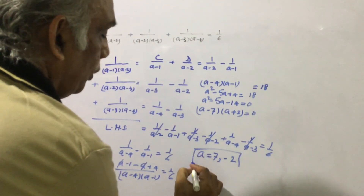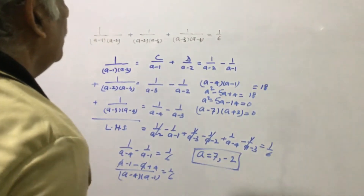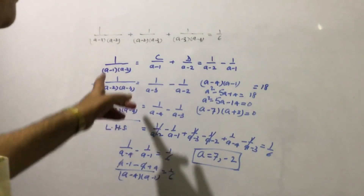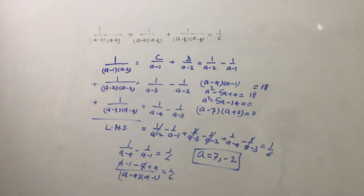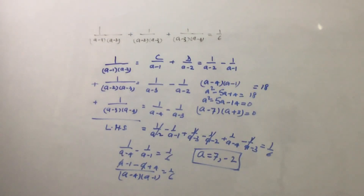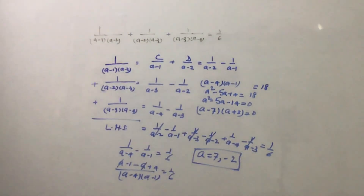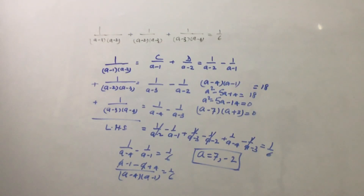So dear friends, this is how we can solve this equation. The trick lies in finding the partial fractions of the given terms. Once we do these partial fractions, it becomes quite easy — this is basically a second order equation. Kindly like it and share it with your friends, and kindly subscribe to my channel. Thank you very much.